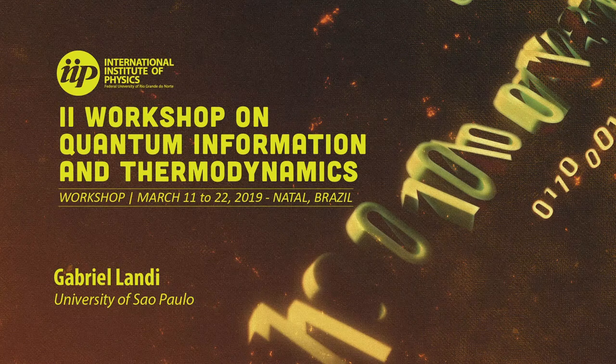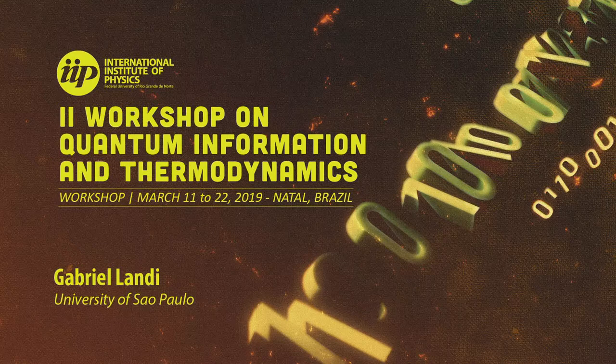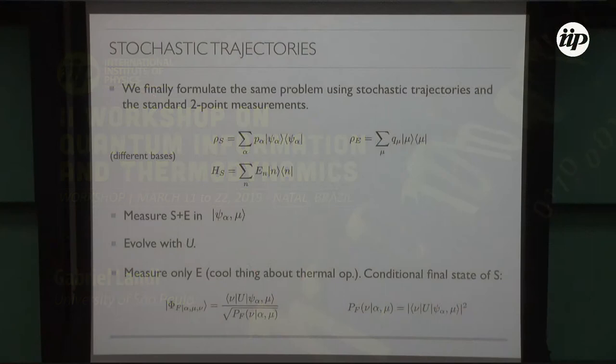The state of the system conditioned on the trajectory being alpha mu nu is given by this guy, with some probability transition probability related to this part.